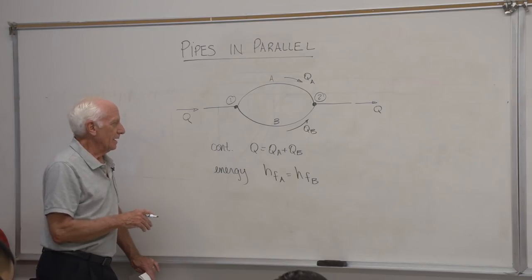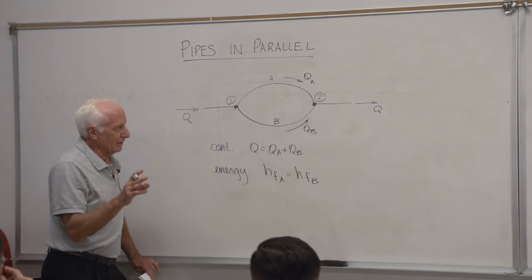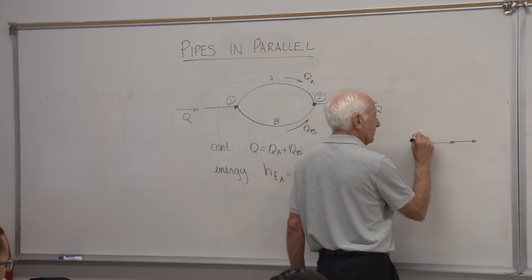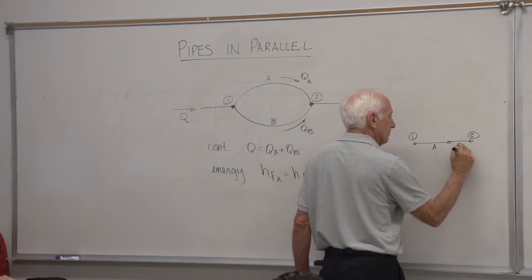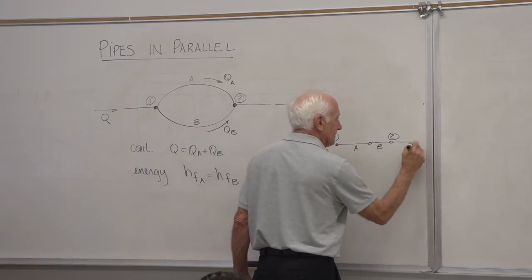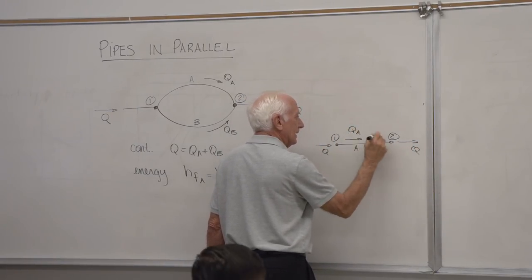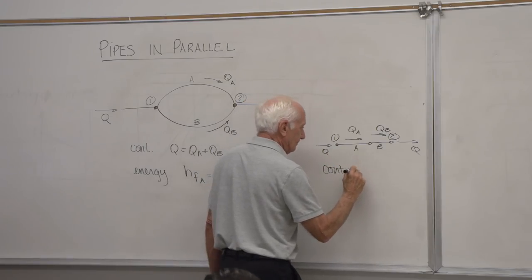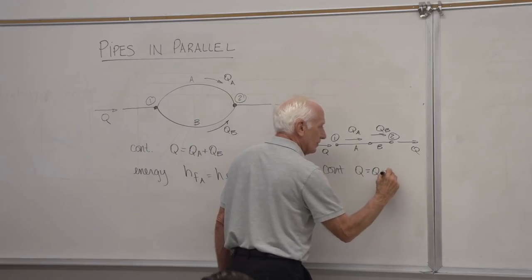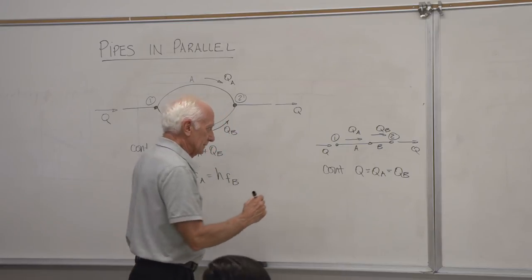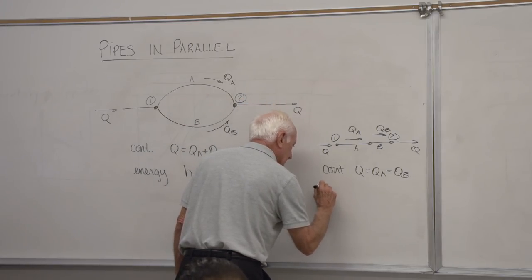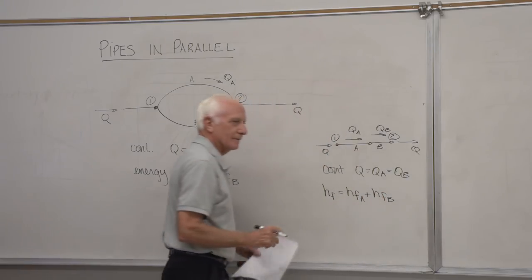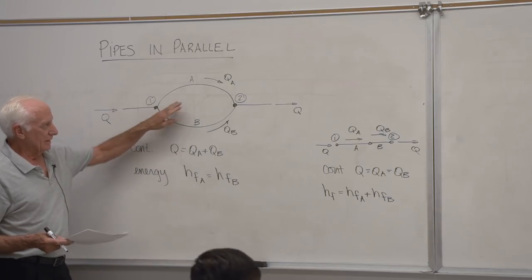That's the energy equation. Let me contrast that with what we did for pipes in series. In series: point one, point two, pipe A, pipe B. Flow rate Q comes in, Q goes out. QA equals QB. Conservation of mass: the flow through pipe A must equal the flow through pipe B. The total head loss due to friction equals HFA plus HFB.